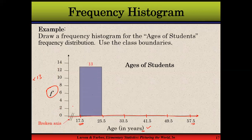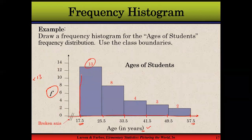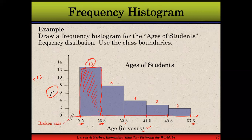Next is to construct the bars. The first bar has a height of 13 because the frequency of the first class was 13. This bar represents the class starting from 17.5 and going up to 25.5. The next class starts from 25.5 and goes up to 33.5, which makes this continuous data. The next class has a frequency of 8, so the height of that bar is 8. Then the remaining bars have frequencies of 4, 3, and 2. There are 5 classes and 5 adjacent bars in the histogram with no gap between them.